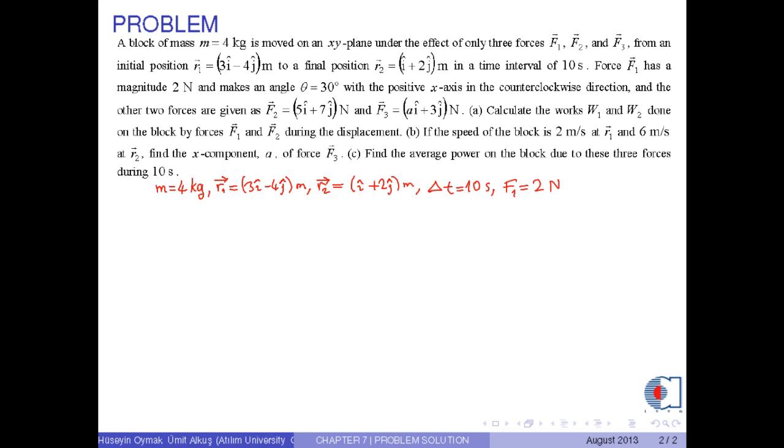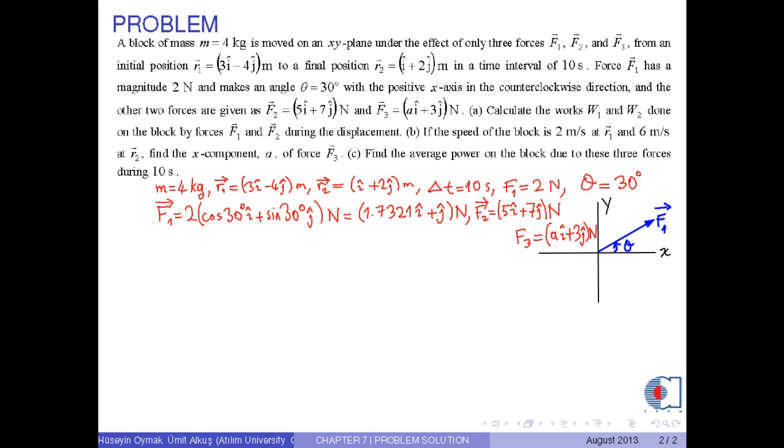Force F1 has a magnitude 2 newtons and makes an angle theta equal to 30 degrees with the positive x-axis in the counterclockwise direction. And the other two forces are given as F2 equal to 5i hat plus 7j hat newtons and F3 equal to ai hat plus 3j hat newtons.